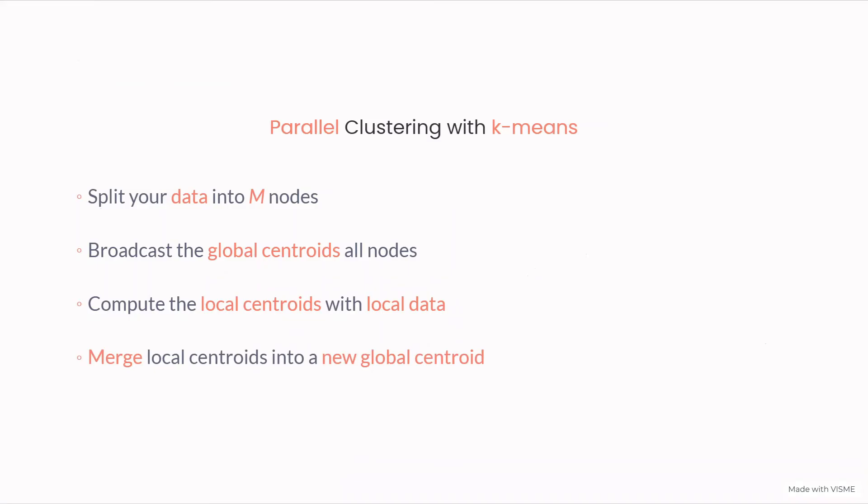After that, we're going to merge our results together and we're going to get an average of many averages. Each node creates its own centroid position. We're going to take an average of all of them. Then the process repeats. We're going to broadcast this new global position across all the nodes until we converge to some value.